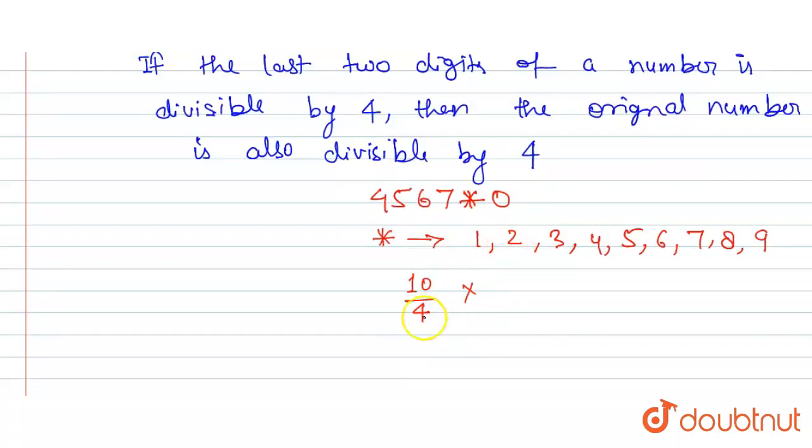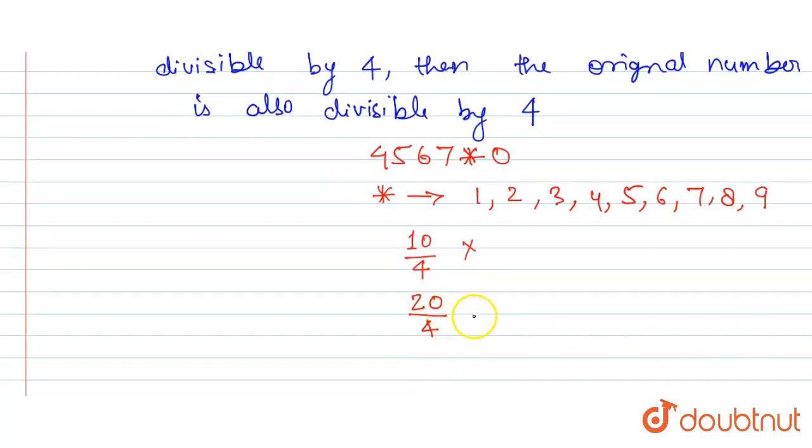Now the next smallest digit is 2. When 2 is there, 20 should be divisible by 4. Yes, now 20 divided by 4 is equal to 5.